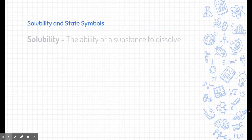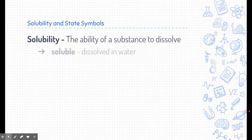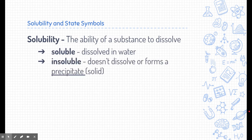We've talked a little bit about solubility before. Solubility is the ability of a substance to dissolve, and a substance can either be soluble or insoluble. Soluble means it is able to be dissolved in water, and insoluble means it doesn't dissolve — or it forms a precipitate. Precipitate is an important word; it's another name for a solid.